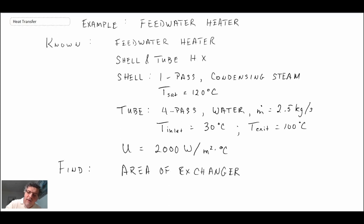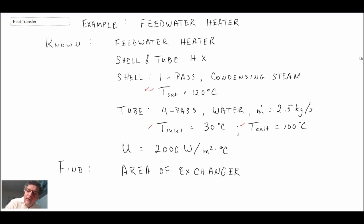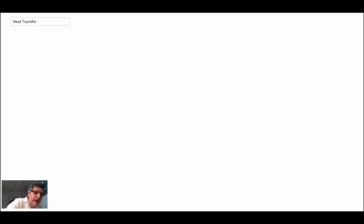We know the inlet temperature on the tube side — this is the cold fluid — we know the exit temperature, and we know the inlet and exit on the shell side, which is our hot fluid. Because it's going through a condensation process, the temperature remains at 120 degrees C. Those are all the elements we need in order to apply the log mean temperature difference, so let's go ahead and use the LMTD analysis.